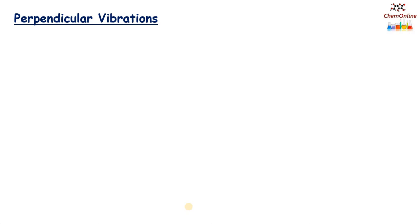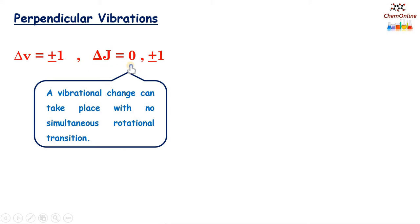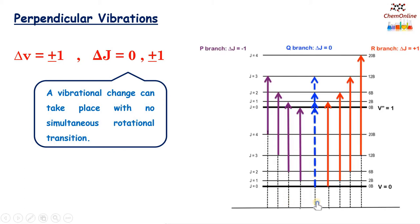Now consider the perpendicular vibrations of linear molecules. For perpendicular vibrations, the selection rules are delta v equals plus or minus 1 and delta j equals 0, plus or minus 1. Since delta j equals 0 is allowed, a vibrational change can take place with no simultaneous rotational transition. This gives the rotational-vibrational spectrum a Q branch in addition to the P and R branches, corresponding to the transitions with delta j equals 0.